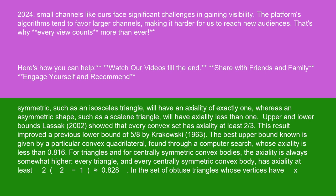Upper and lower bounds: Lasak (2002) showed that every convex set has axiality at least two-thirds. This result improved a previous lower bound of 5/8 by Krakowski (1963). The best upper bound known is given by a particular convex quadrilateral, found through a computer search, whose axiality is less than 0.816.